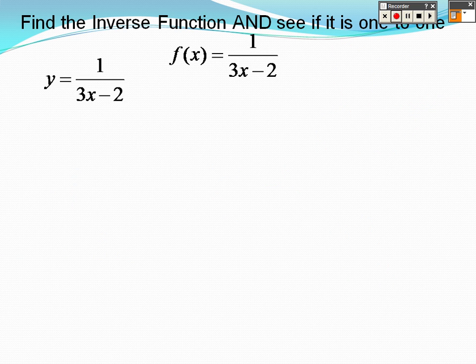See if that's one-to-one and define its inverse. I need to get x by itself. In order to get this x by itself, I'm going to multiply, because I can't do anything when it's in the bottom. So 3x minus 2 to both sides. So I get 3x minus 2 times y equals 1.